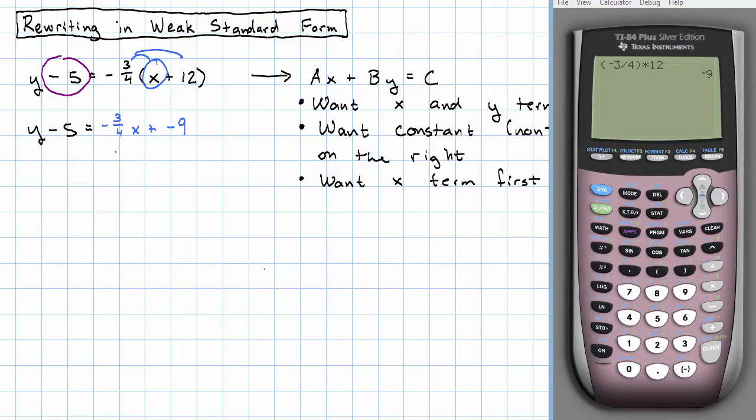Now I want to get rid of this x term on the right. To do that, I'll add three-fourths x to both sides. Notice, there are no x terms currently on the left-hand side. There's currently nothing for me to combine that three-fourths x with, so I'll just have three-fourths x plus y minus 5 equals negative 9.